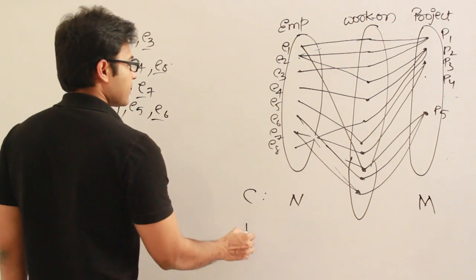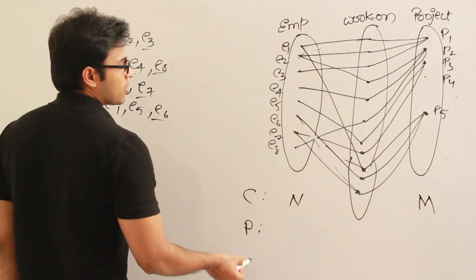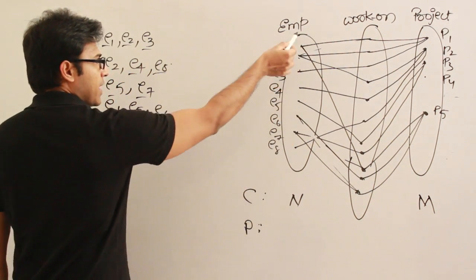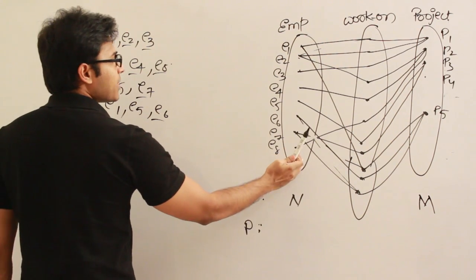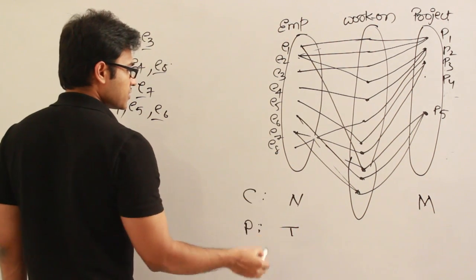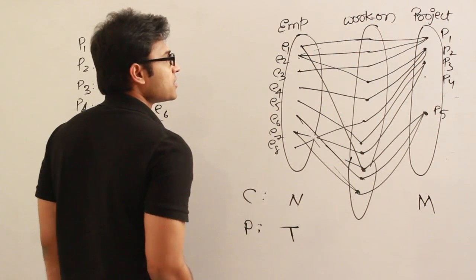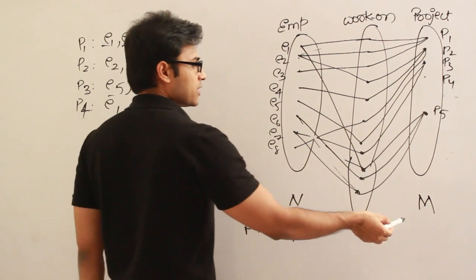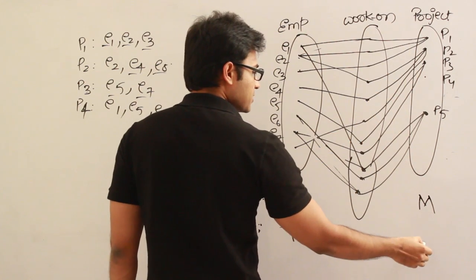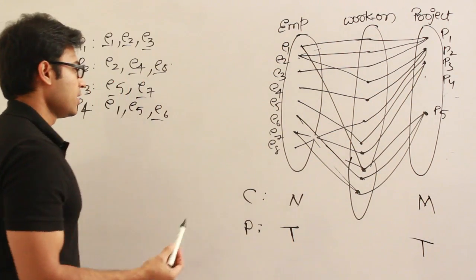What about participation — total or partial? Every entity in the employee set is participating in at least one relationship, therefore it is total participation. Similarly on the project side, every project is participating in at least one relationship — also total participation.